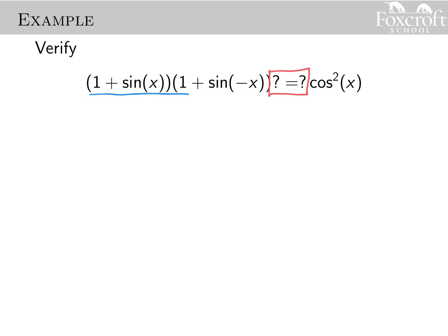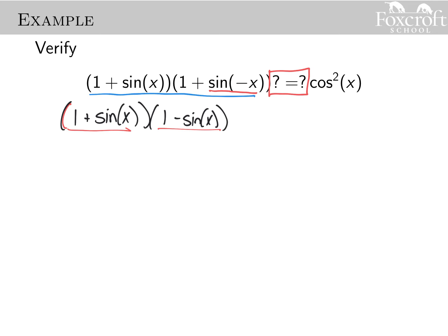I can only work on one side at a time, so I'm going to focus on the left-hand side. Each time I ask: is there an algebraic property or a trig identity I can use? Right away I see sine of negative x — pretty much any time you see a negative inside the parentheses, you can use your even and odd identity. So the negative pops out in front. I haven't touched the right-hand side. Now I'll multiply these two together by foiling.